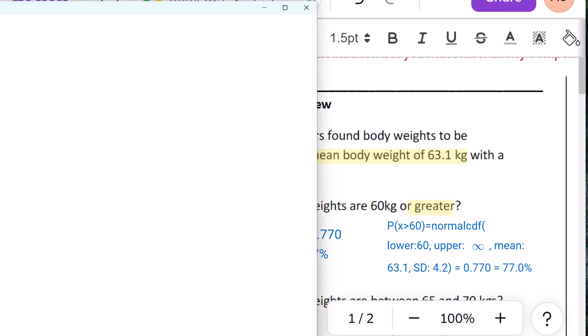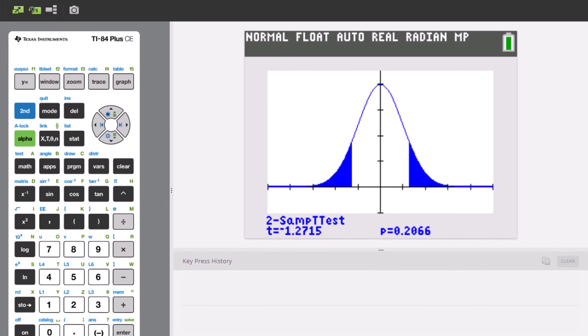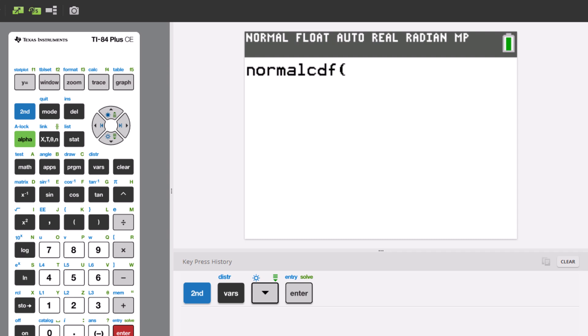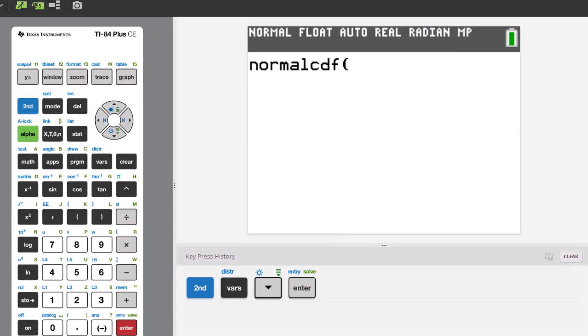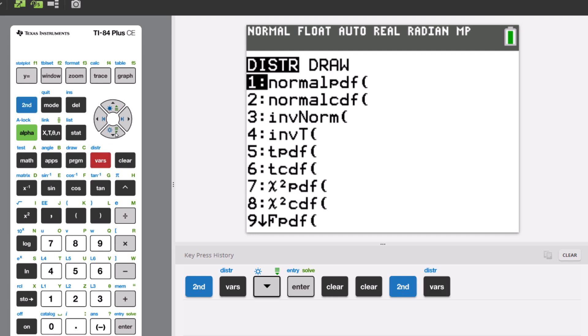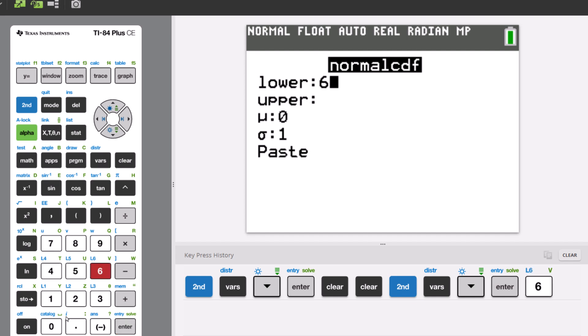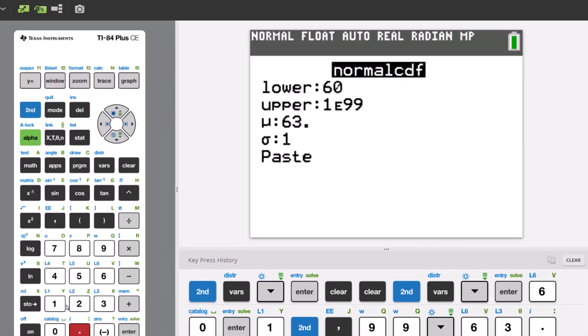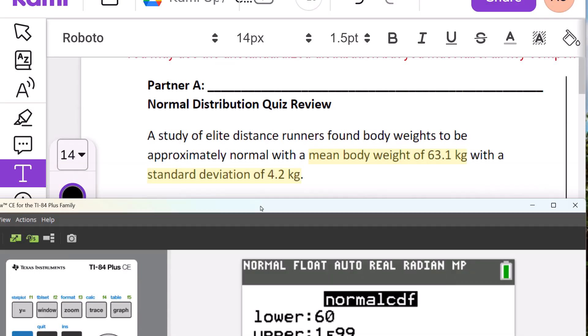Where's my calculator? So let me just kind of slide this in here. So we go second distribution, normal CDF. And what did we say? 60 to infinity. Second distribution, normal CDF. So we're doing 60. And then we're going to infinity. So we hit the 1. Then we hit that second EE, not the green E. 99. And then, so that's positive infinity. Remember, you can have negative infinity. And the mean was 63.1 standard deviations. 4.2.